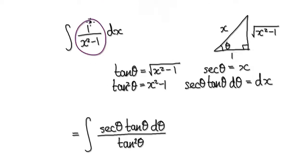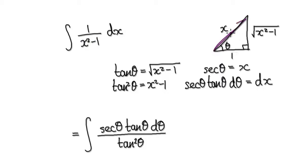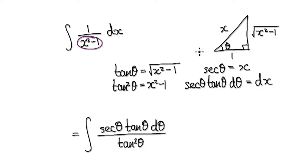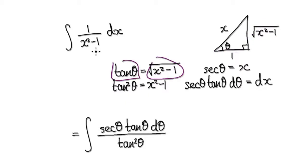We are trying to integrate this. Your eyes should zoom into this bit. Create a triangle in such a way that this will be true. If you make the hypotenuse to be x and the adjacent to be 1, then the opposite will have no choice but to be root x squared minus 1. So we are trying to extract this. If you look at this, tan is opposite over adjacent.